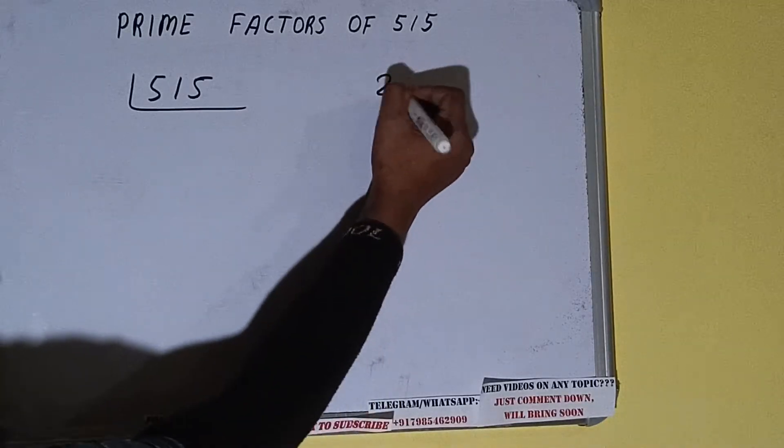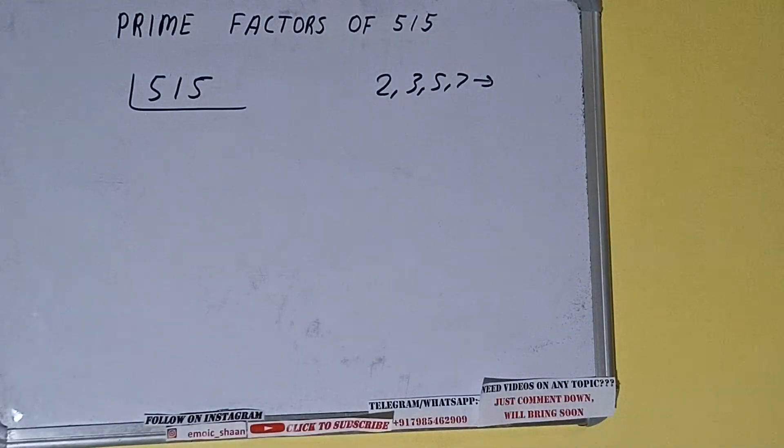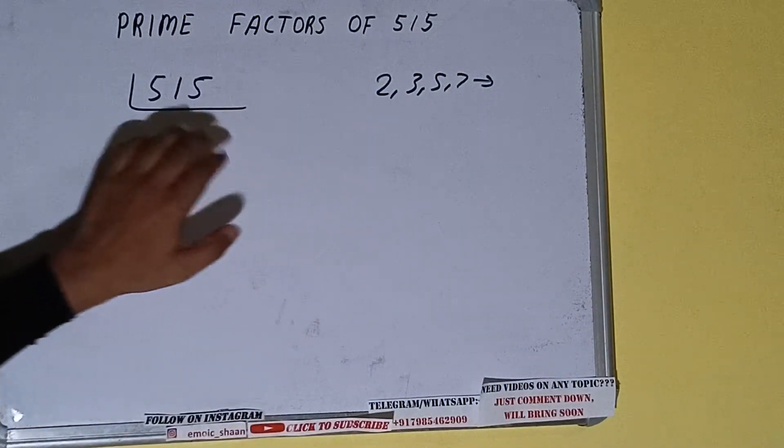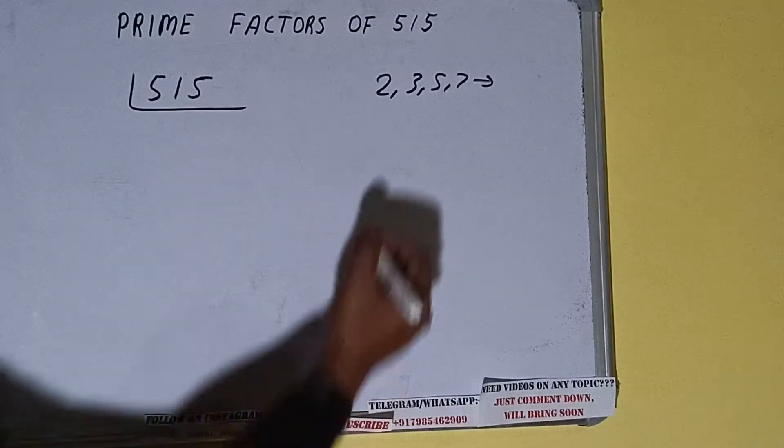Like two, three, five, seven and so on. All right, so we'll be checking with the lowest prime number we have, that is two. Is the number 515 divisible by two? Clearly not, because the number is odd.